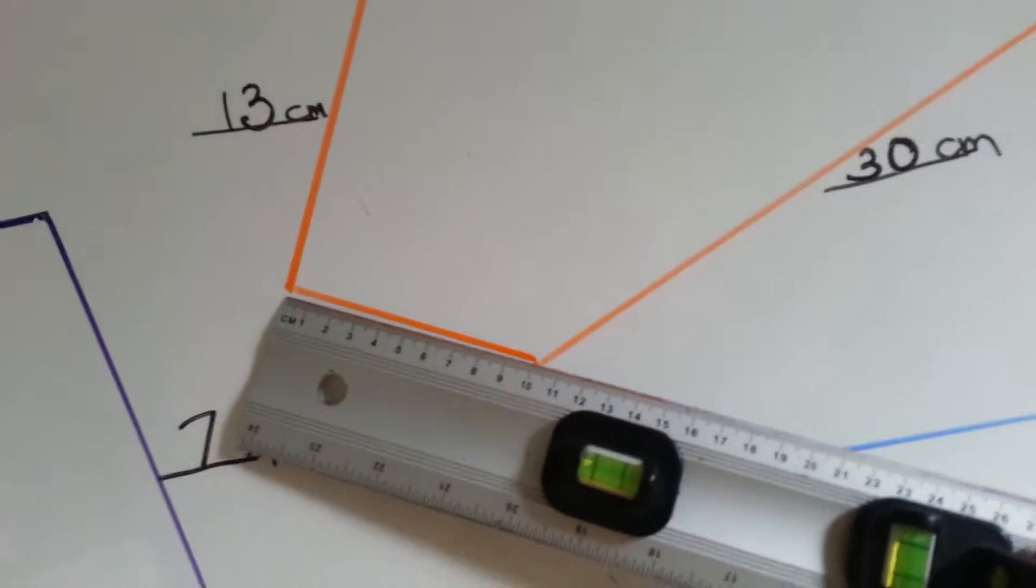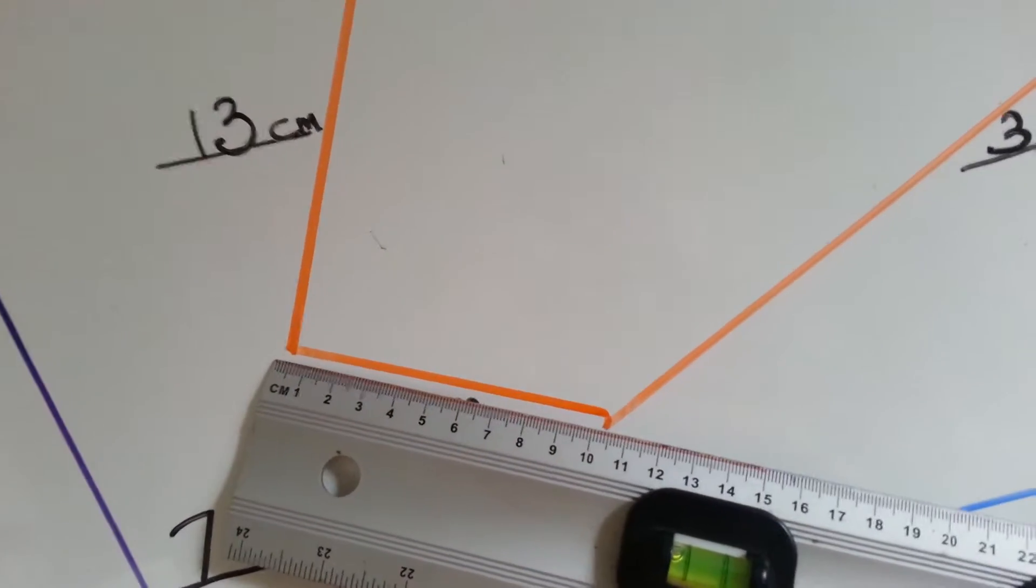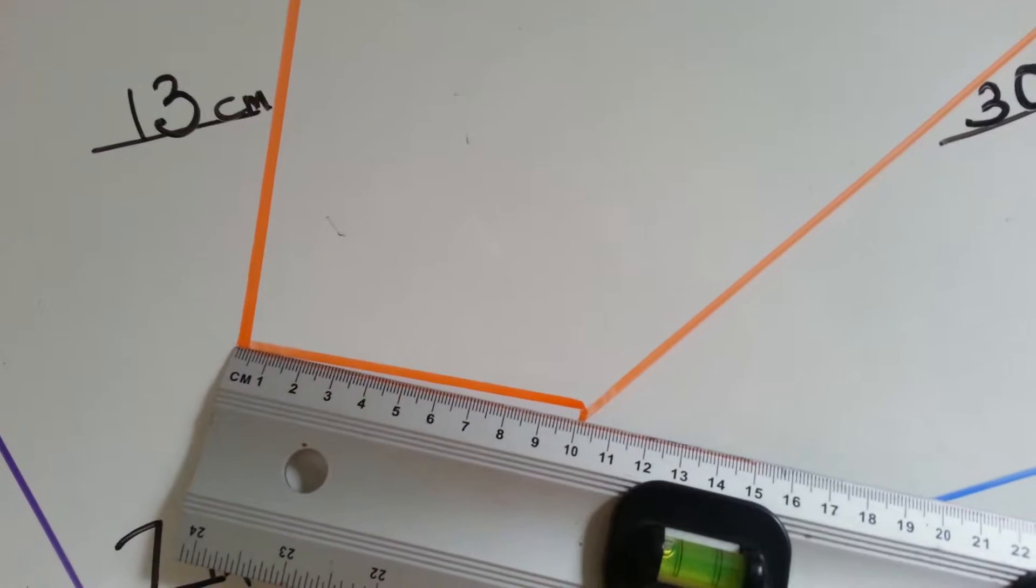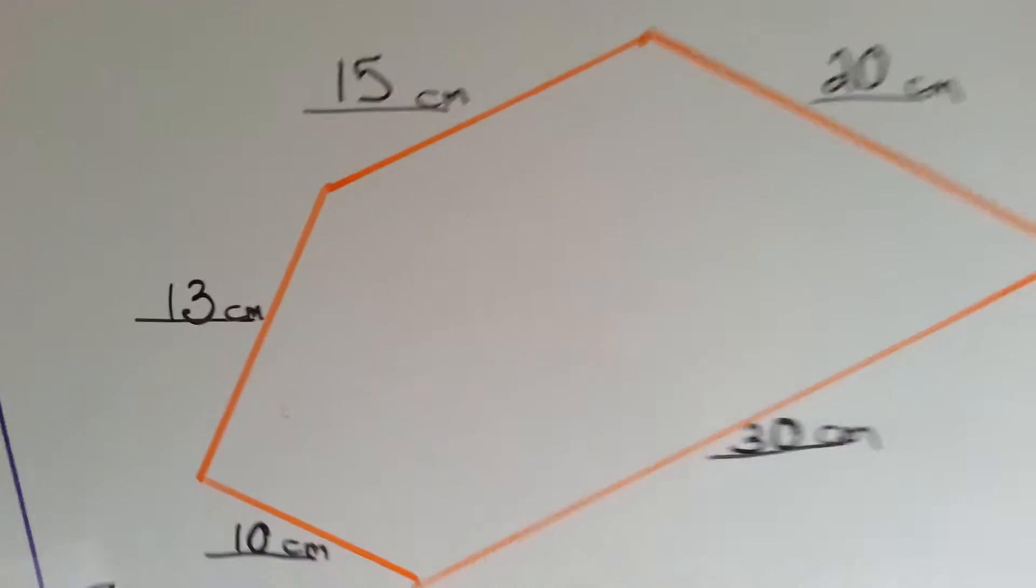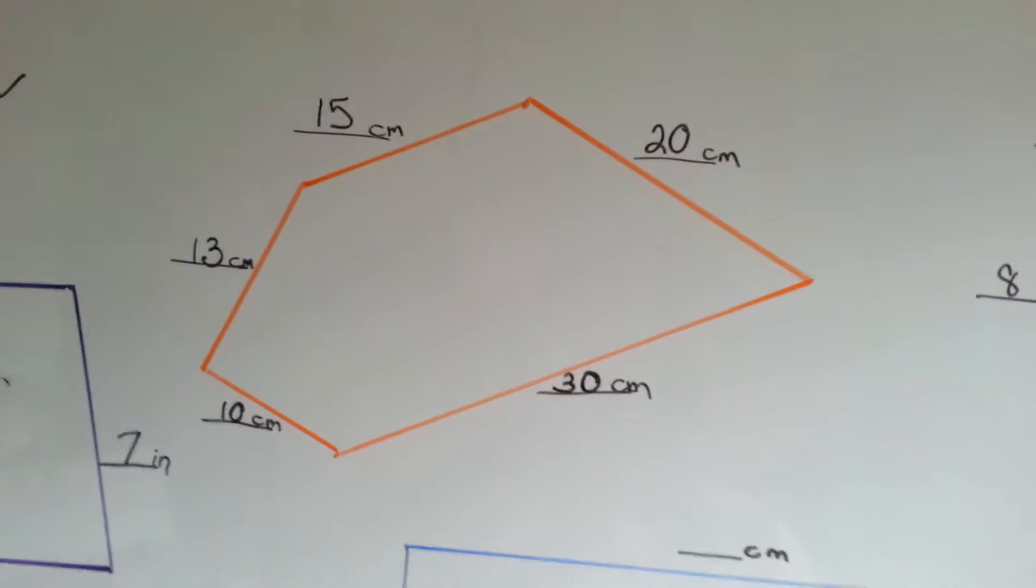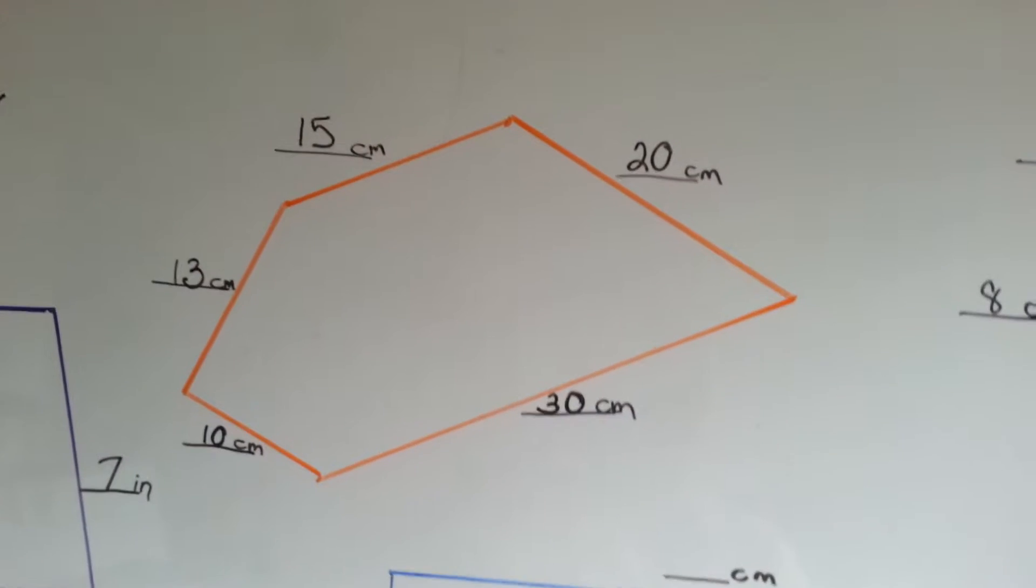This side is 10 centimeters, and if I line this up here, you can see it's 10 centimeters. See how the orange line stops at the 10? And I measured it all the way around, and those are the measurements I got, and that's the perimeter of that shape.